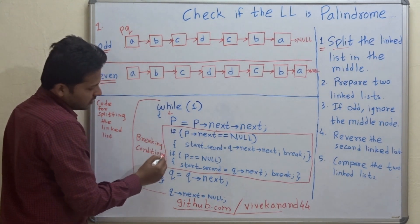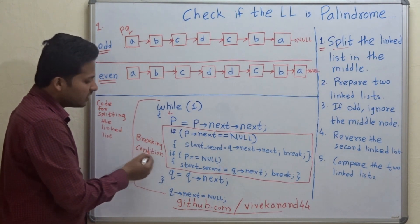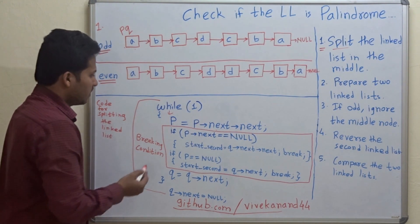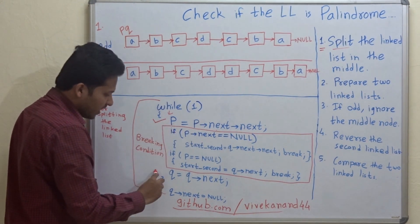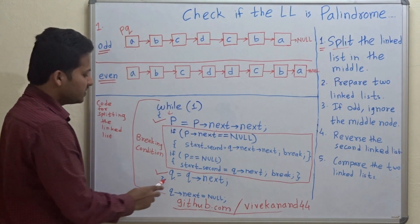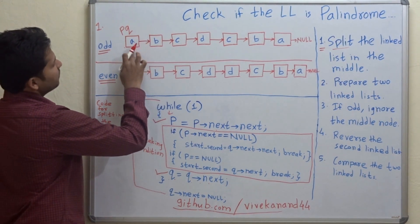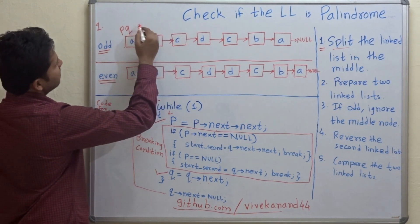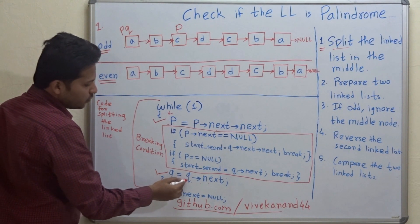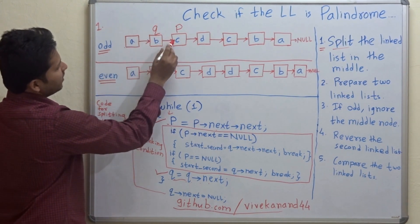We have to ignore the red square break condition for now and will discuss it at the last iteration. The important line is Q equal to Q->next, which means Q will move forward by one position at each iteration. So for the first iteration, P will move forward by two positions and Q will move forward by one position. At the end of this iteration, Q will point to B and P will point to C.